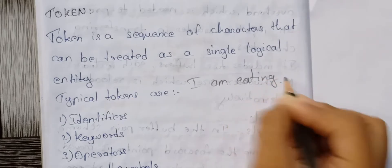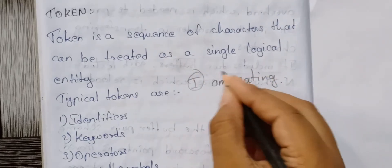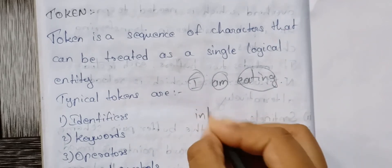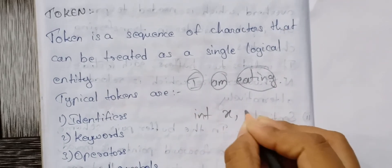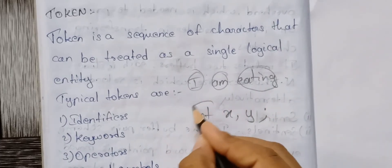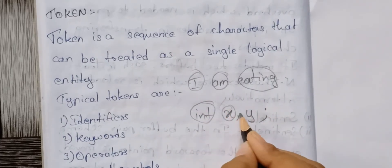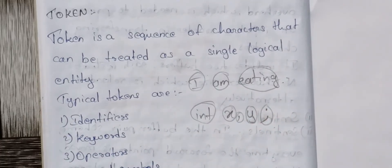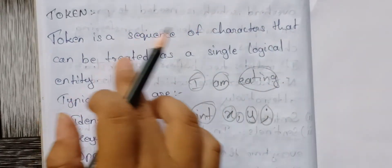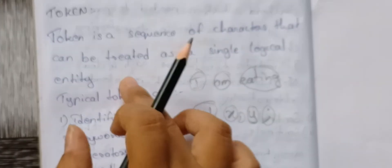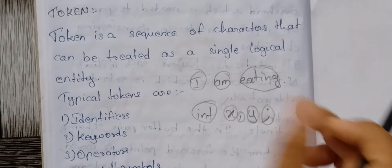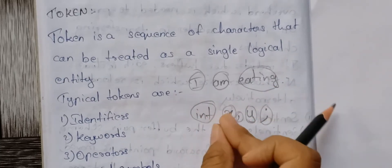Similarly, in programming: int, x, y, semicolon — int is a token, x is a token, y is a token, semicolon is a token. Each is a single logical entity.